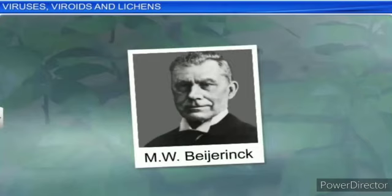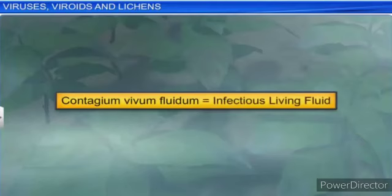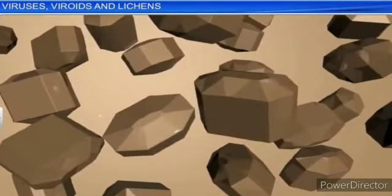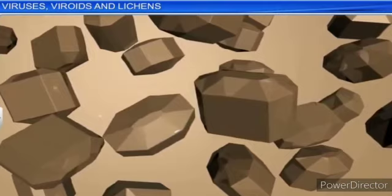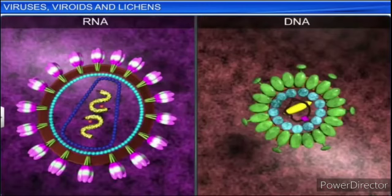M.W. Beijerinck in 1898 demonstrated that the extract of infected tobacco plants could cause infection in healthy plants and called the fluid 'contagium vivum fluidum' — infectious living fluid. W.M. Stanley in 1935 showed that viruses could be crystallized and that crystals consist largely of proteins. They are inert outside their specific host cell. Viruses are obligate parasites. In addition to proteins, viruses also contain genetic material — either DNA or RNA — making them either DNA viruses or RNA viruses.